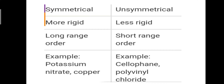Amorphous solids are less rigid compared to crystalline solids, which are more rigid. Crystalline solids have long-range order, while amorphous solids have short-range order.